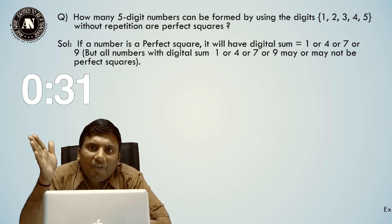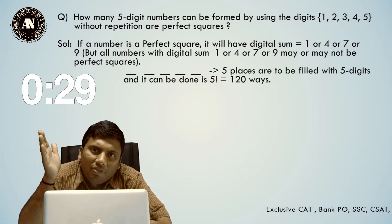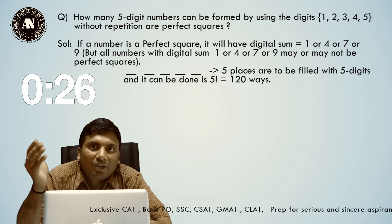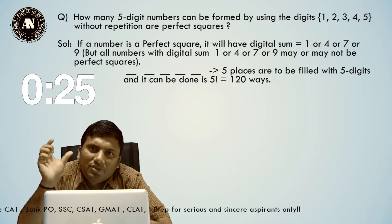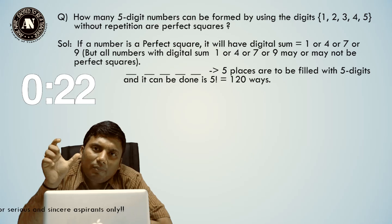There are five digits and five places. These five digits can come in any of the five places in 5 factorial ways, which is 120. Observe one out of those 120 numbers - for example, 12345.